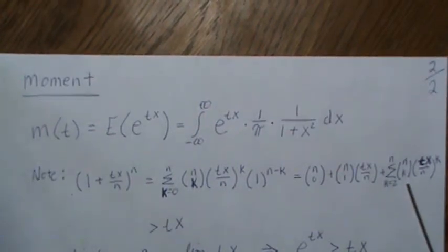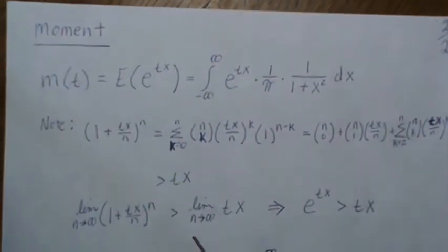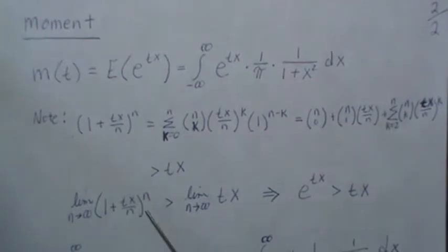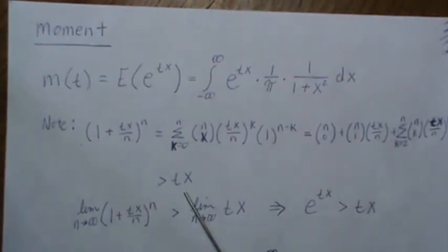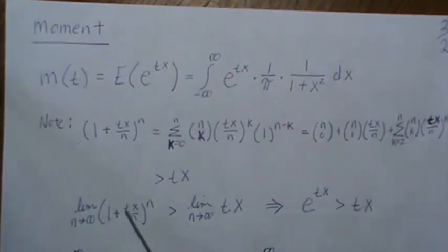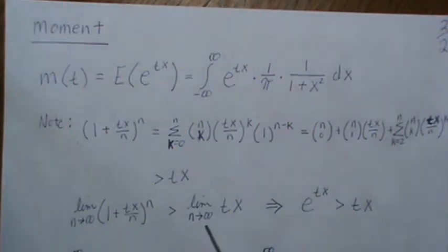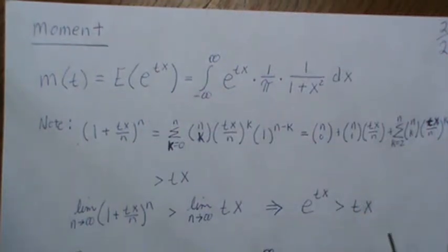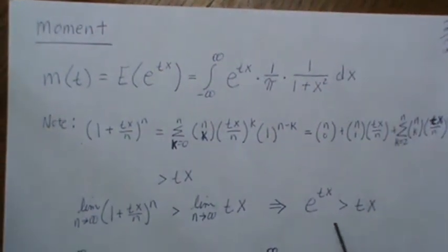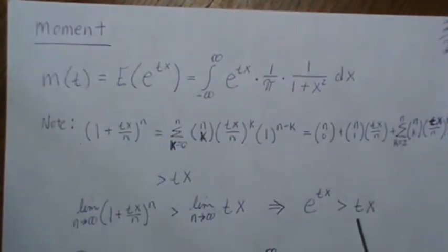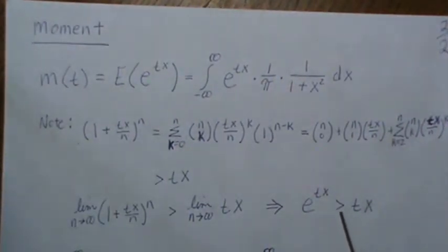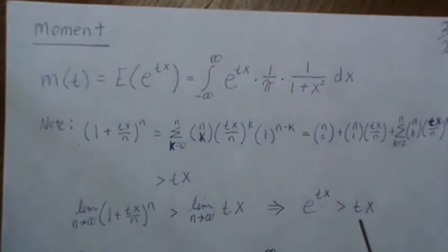Now let's take the limit as n goes to infinity on both sides of this inequality. This here is the formula for e^(tx), and there's no n here, so it just stays tx. This is a quick little proof that e^(tx) is always strictly greater than tx.